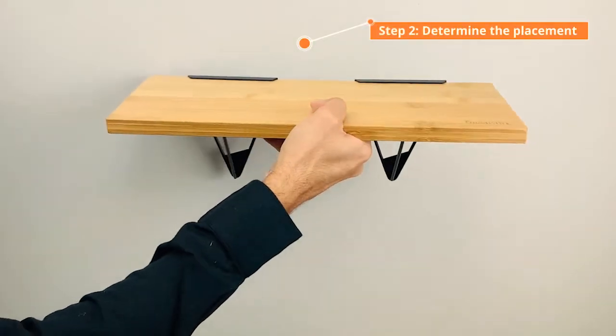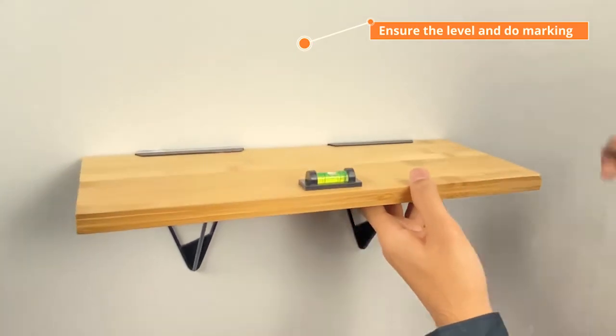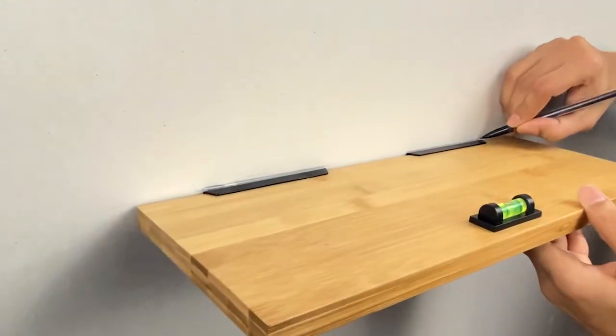Determine the placement of the shelf. Ensure it is properly level using the bubble level indicator. Now mark the location of both brackets with a pencil.